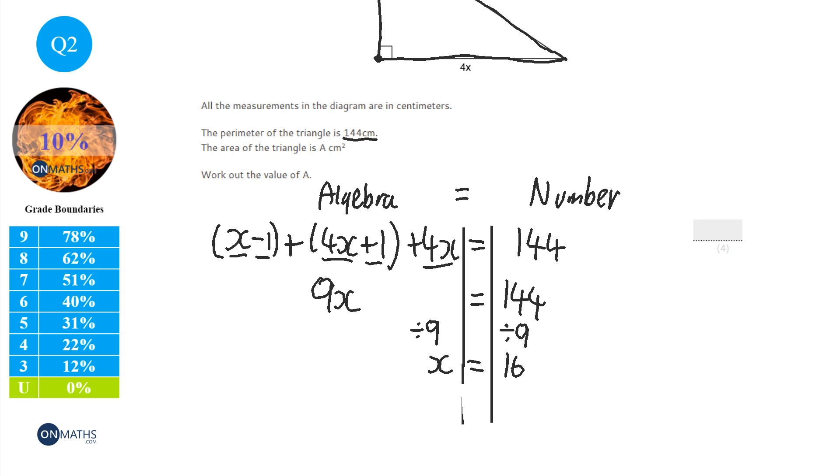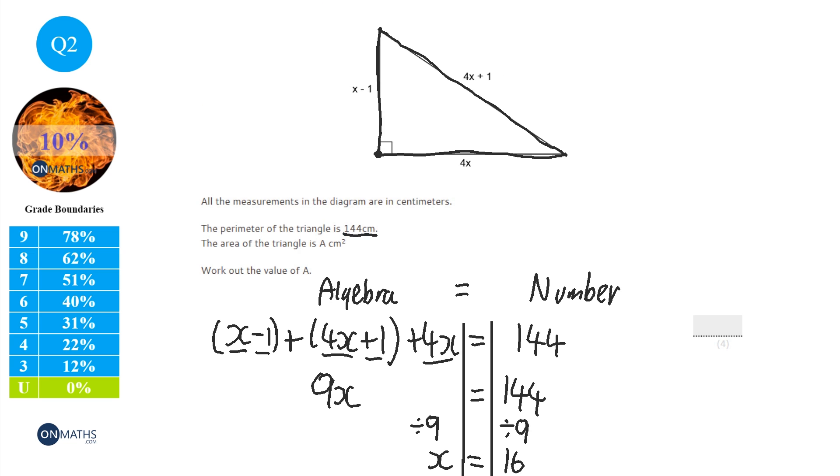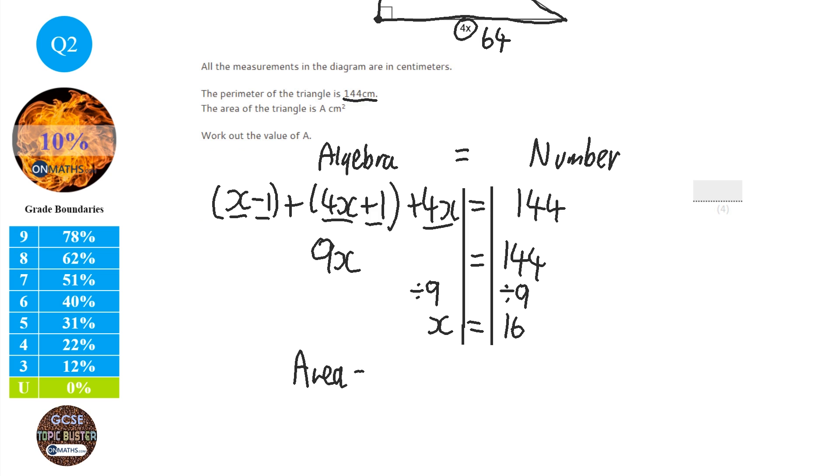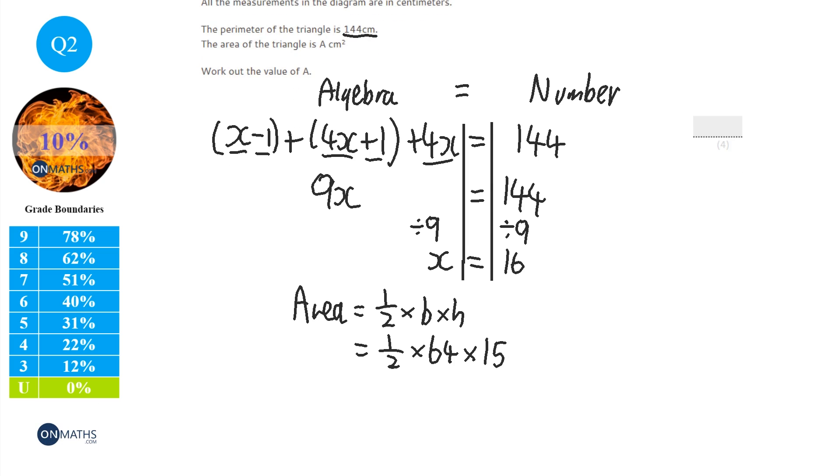So we find out what x is, which is a good start, but it doesn't answer the question yet, because we need to use that information to find out what the area of the triangle is. Well, this bottom one here says 4x. So we're going to do 4 times 16, which is 64. So we know the length of that is 64. This one here says x minus 1. So we're going to do 16 minus 1, which is 15. Now, to work out the area, we're going to do half times base times height. We've worked out that the base is 64 and the height is 15. So we're going to do 0.5 times 64 times 15, and it gives me the answer of 480, which is my answer.